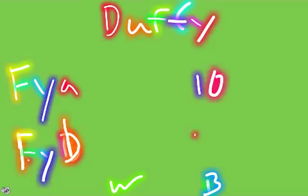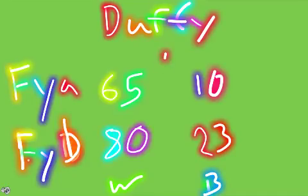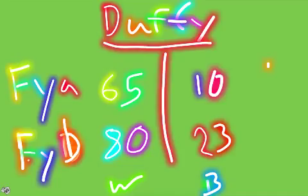When you look at the first two digits — the percentages across populations — you can tell there's a big difference, because Duffy is a receptor site for Plasmodium vivax. So if you lack the Duffy antigen, you will be less likely to be infected by Plasmodium vivax, which is endemic to Africa.